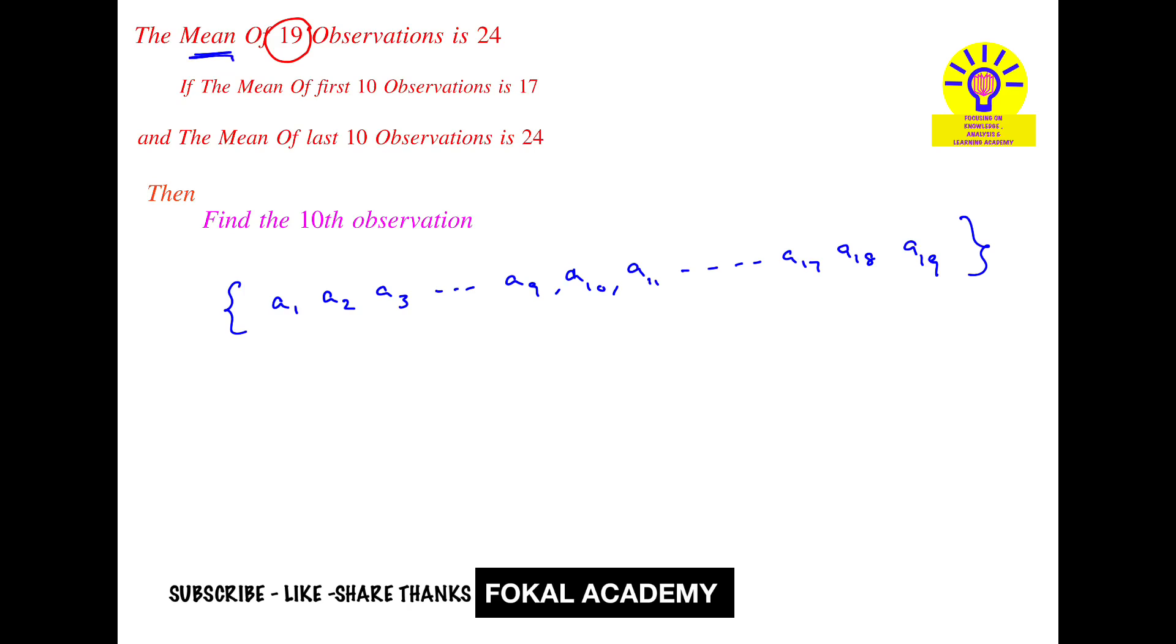Mean equals the sum of all observations divided by the total number. So the sum of all 19 observations divided by 19 equals 24. Let A represent the sum from a₁ to a₉, and let B represent the sum from a₁₁ to a₁₉.